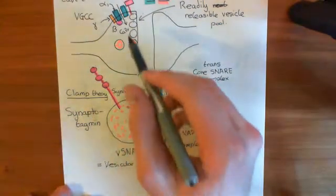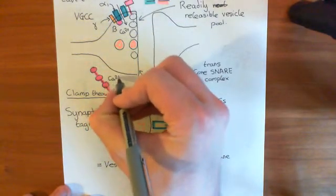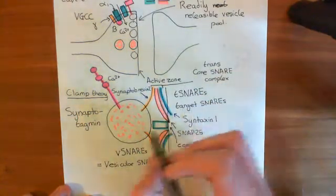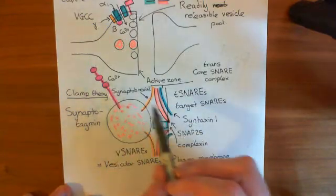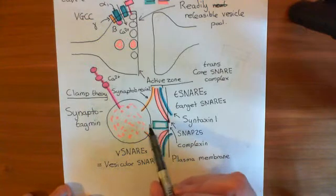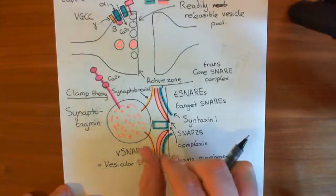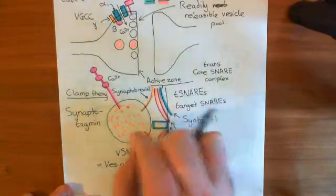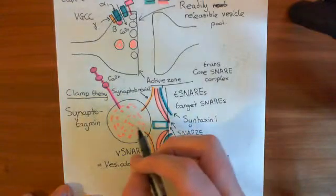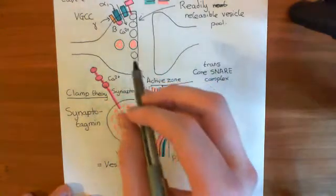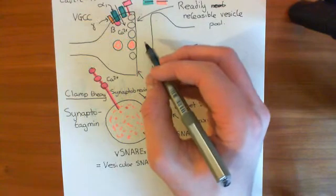When calcium goes up in the vicinity of synaptotagmin, calcium is going to bind to the synaptotagmin. And what is going to happen or what's believed potentially as far as the clamp theory is concerned to happen is that synaptotagmin is going to move the complexin protein out of the way. And that's going to allow these core snare complexes to roll up and bundle up even more, pulling the vesicle membrane closer to the plasma membrane, and then they'll fuse. So that's believed to be how you fuse the two membranes in response to calcium, and therefore how you release the neurotransmitter from the vesicles into the synaptic cleft.